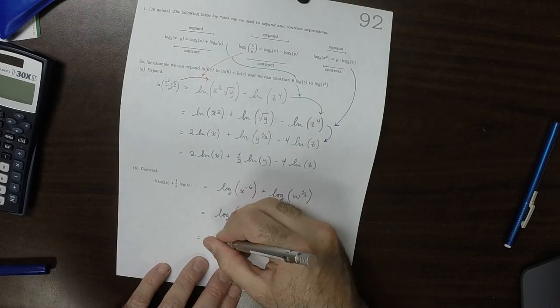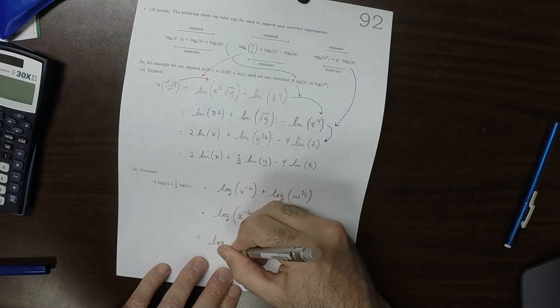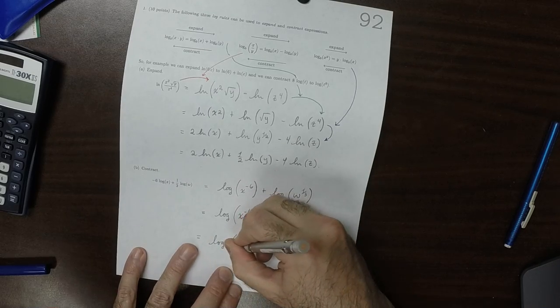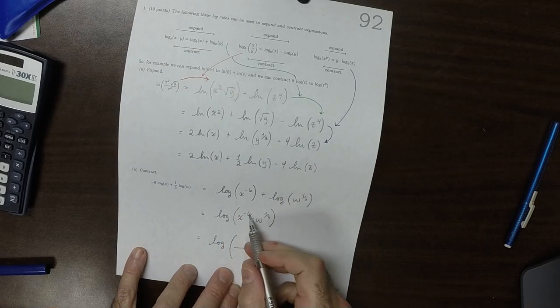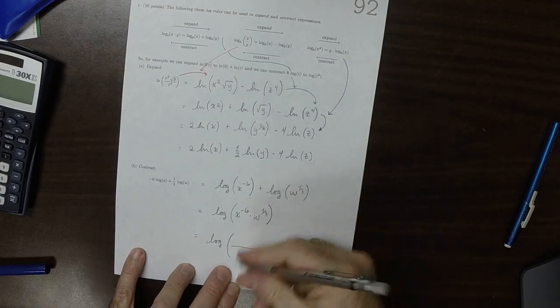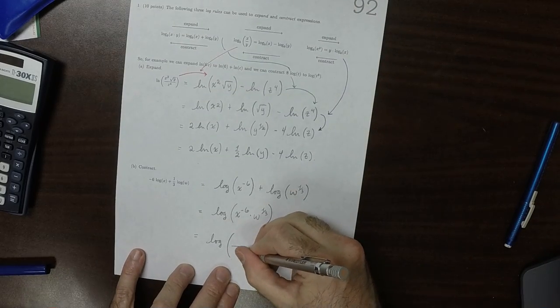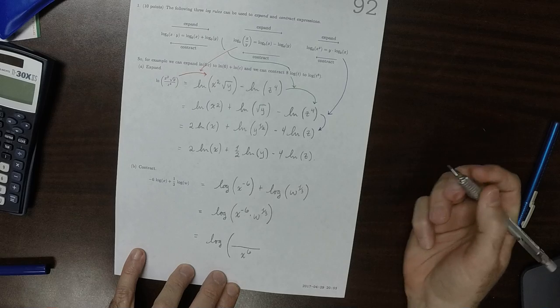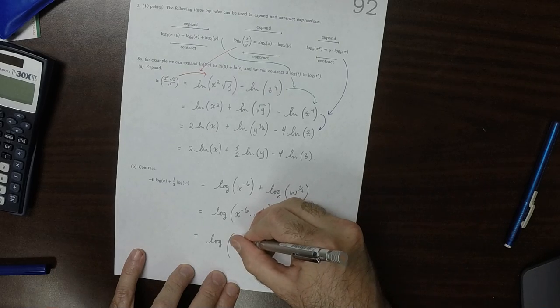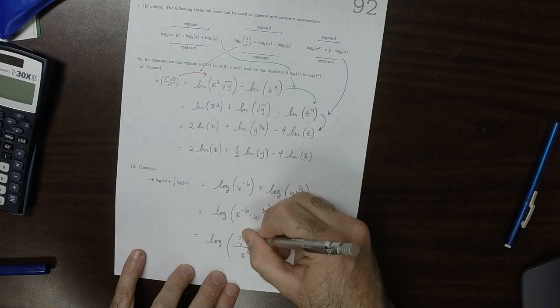And then I can write this maybe a little more nicely as well. I can move the x to the denominator, so that it'll have a positive exponent. And then I can write that fractional exponent 1 third as cube root.